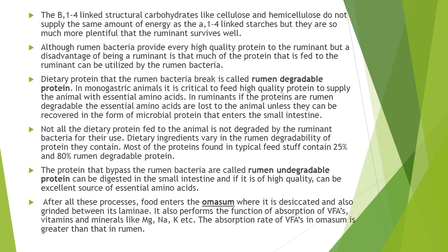The rumen bacteria have the ability to combine nitrogen from ammonia or urea with carbon skeletons liberated from dietary carbohydrates in order to form all the amino acids that make up their protoplasm. When bacteria die or move into the small intestine with other digesta, the proteins present within the bacteria can be digested by mammalian proteolytic enzymes, and the amino acids are used by the ruminant. This microbial protein is considered of very high quality because its amino acid profile is almost identical to that of muscle and milk, permitting great conversion into milk and meat by the ruminant.